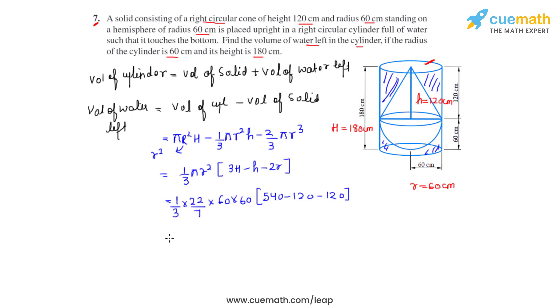So this for the calculation gives us the answer as 792,000 cm³ divided by 7 as the volume of water which is left. If we try to convert it into meter cube, the answer that we will get is 1.131 m³.